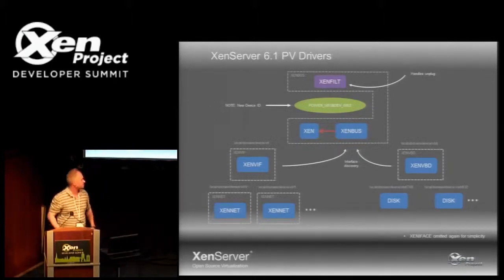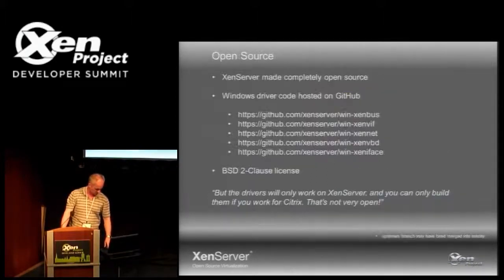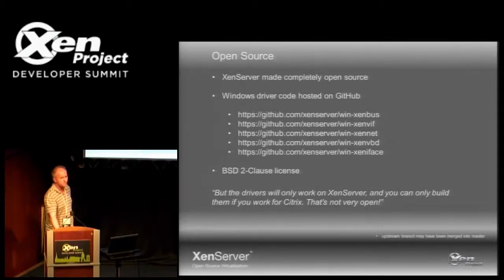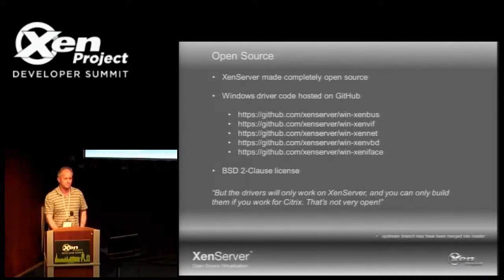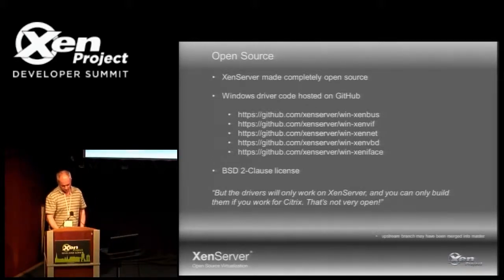Shortly around XenServer 6.2, we also decided to open-source the drivers. We took the source, put it on GitHub, split into five driver packages each in their own repo, and applied a BSD 2-Clause license. We chose BSD 2-Clause because we couldn't logo the drivers if they were GPL — Microsoft's test agreement prevents use of GPL. We went back with GPLv3 and LGPL variations but nothing was acceptable, so BSD is what we stuck with.